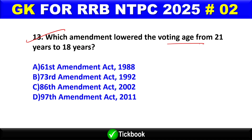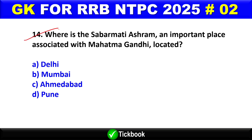Question number 13: Which amendment lowered the voting age from 21 years to 18 years? Option A is the right answer — the 61st Amendment Act, 1988.